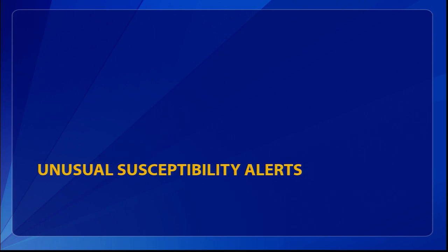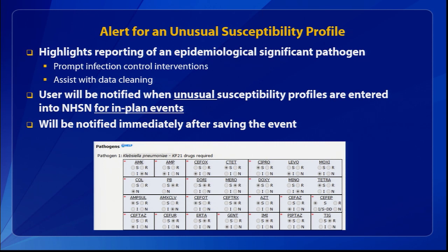Now we're going to talk about the unusual susceptibility alerts in NHSN. This is a somewhat newer feature that started in the summer of 2014. It highlights the reporting of an epidemiologically significant pathogen. The purpose is to help prompt infection control interventions if necessary and to assist with data cleaning. These alerts are not meant to make anyone feel like they're in trouble — it just means we want to make sure you're aware that you entered an unusual susceptibility profile. Users are notified immediately after saving an in-plan event, via a pop-up screen.